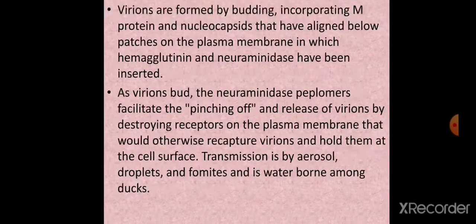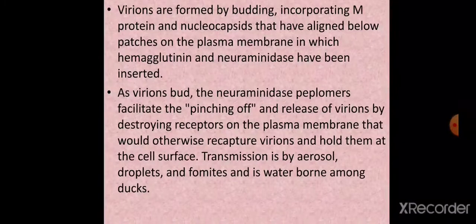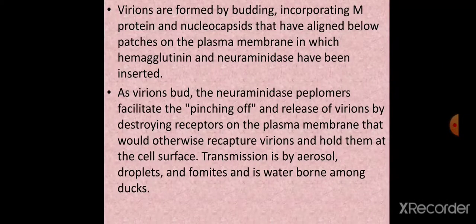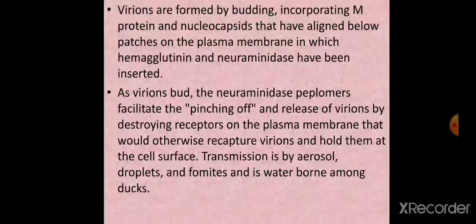Virions are formed by budding, incorporating the M protein which transports from the nucleus. The M protein aligns below patches on the plasma membrane where hemagglutinin and neuraminidase have been inserted. As virions bud from the membrane, neuraminidase peplomers facilitate pinching off and release of virions by destroying the receptors on the plasma membrane that would otherwise recapture the virions and hold them at the cell surface.